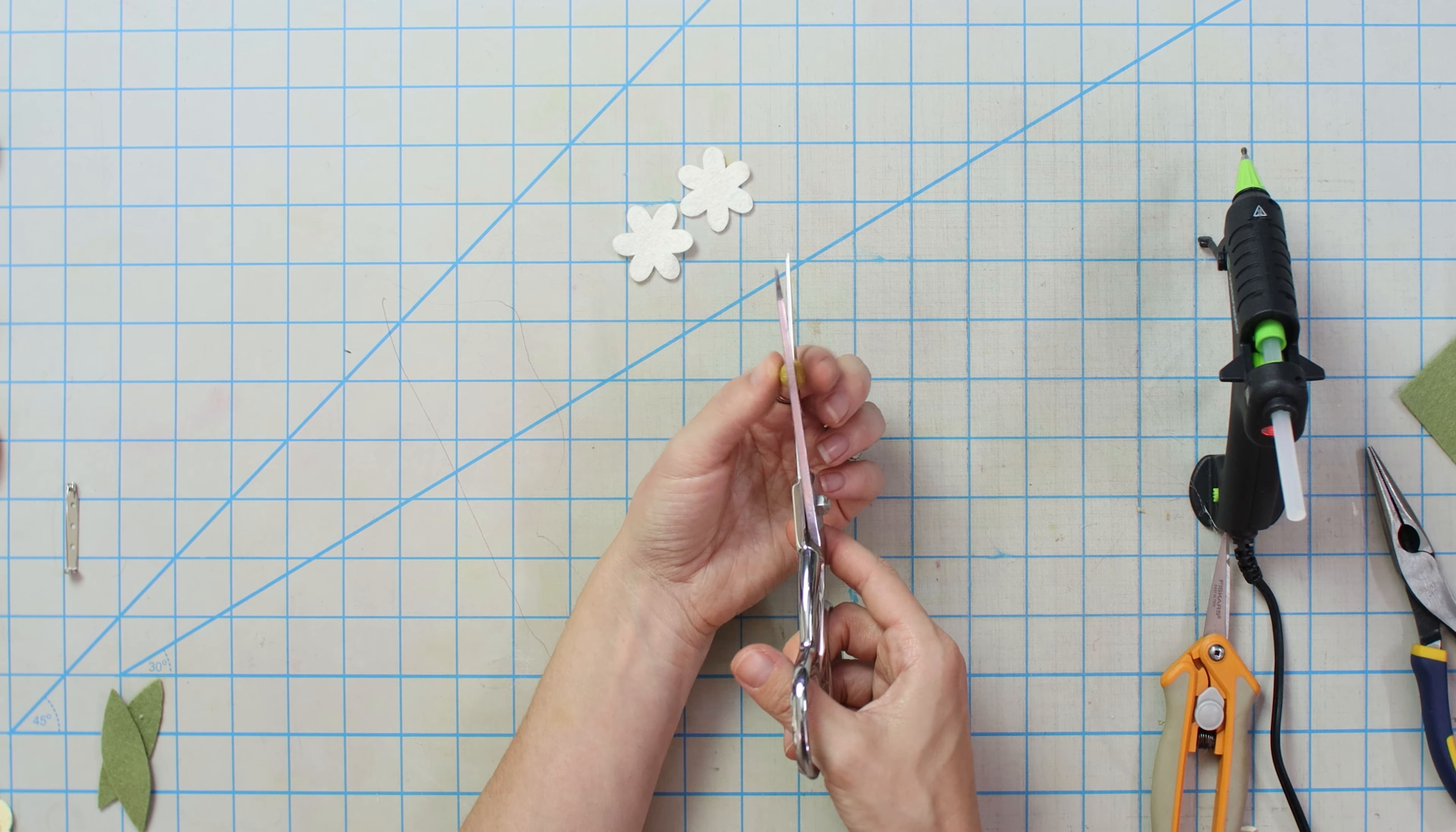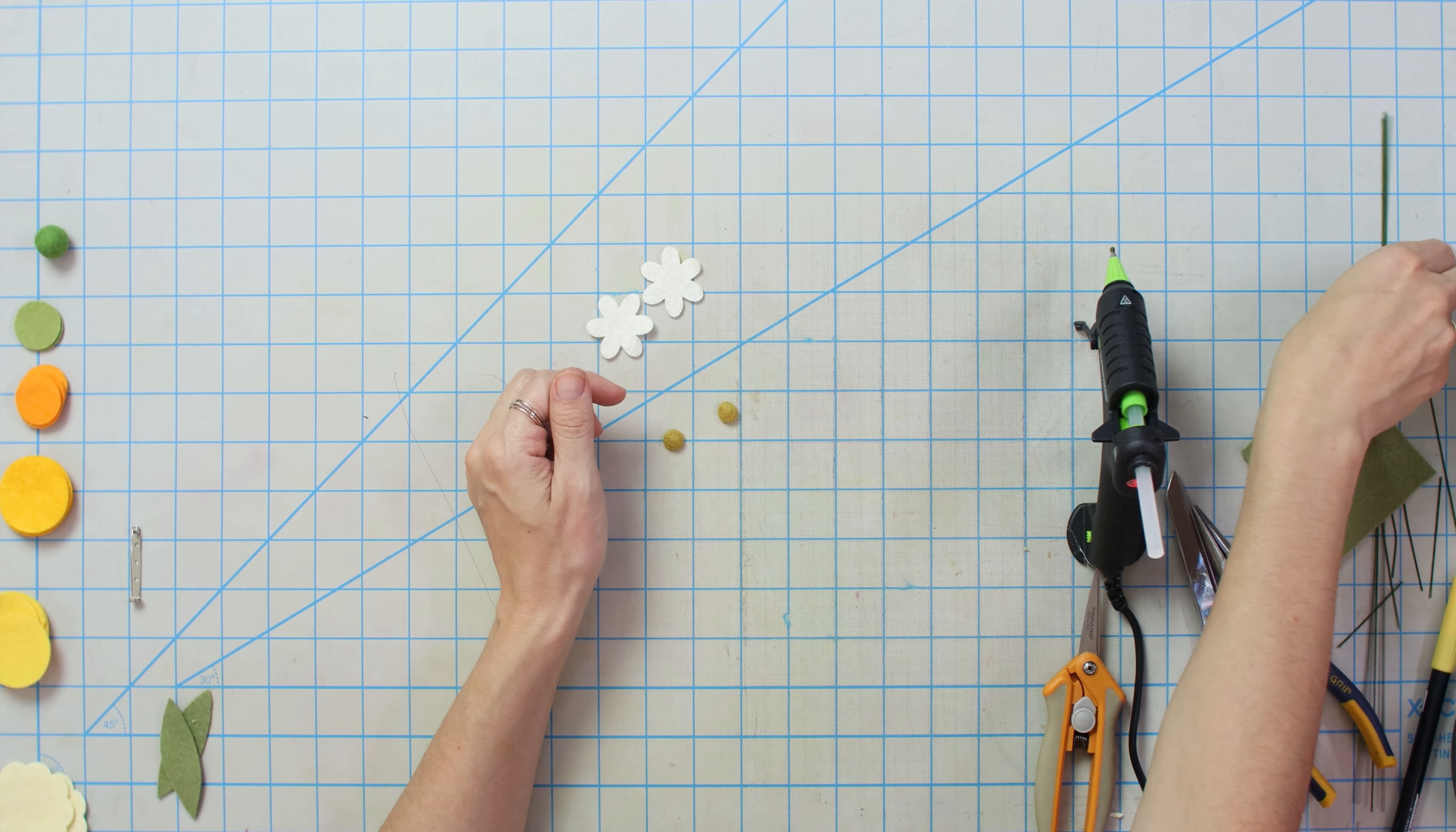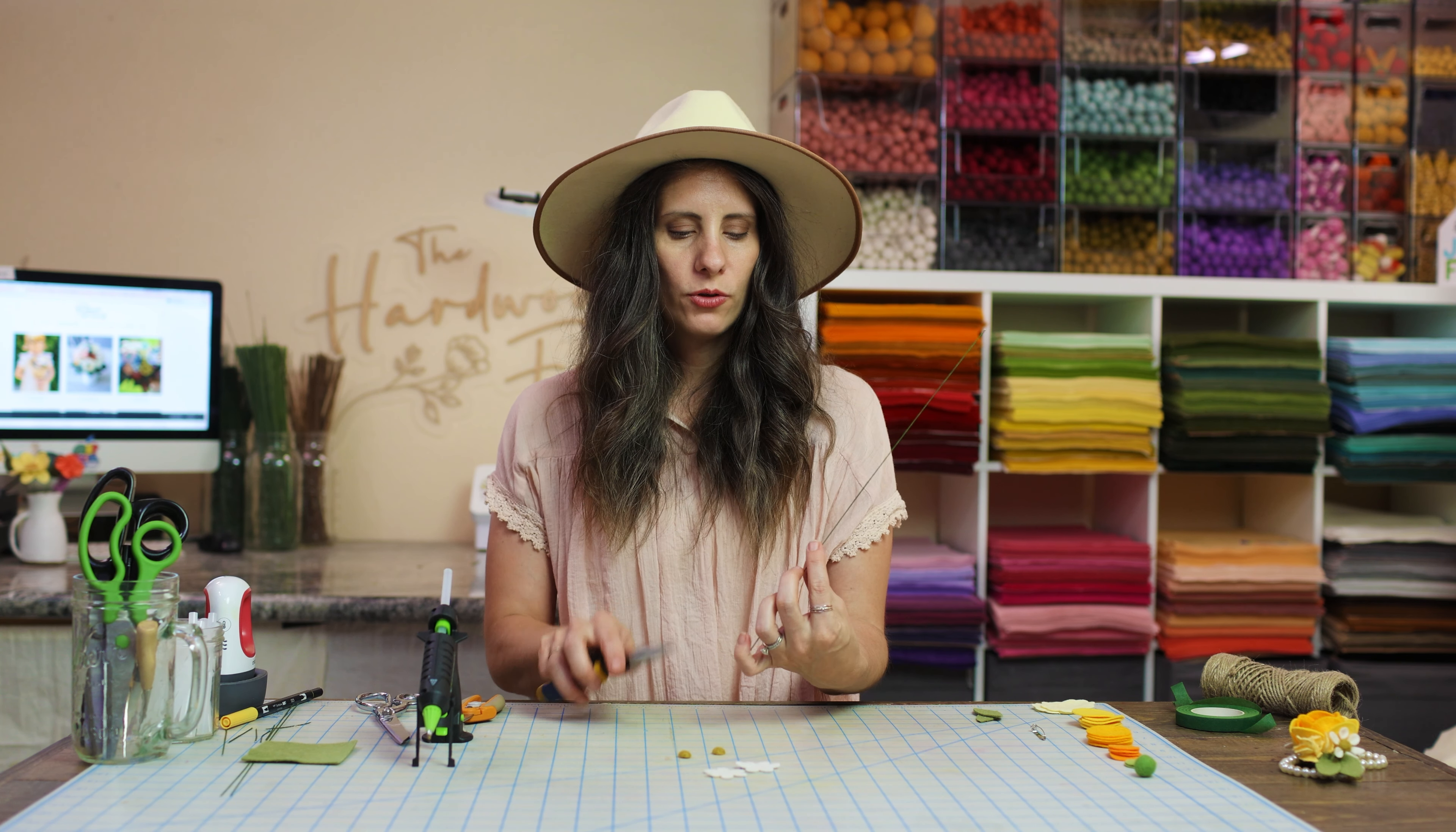Let's get started with the chamomile daisy. So I've got two of these smaller daisy shapes and then one felt ball. This is a 10mm felt ball. So first things first, we're going to go ahead and cut this ball in half. Just be real careful, it's a small little guy.